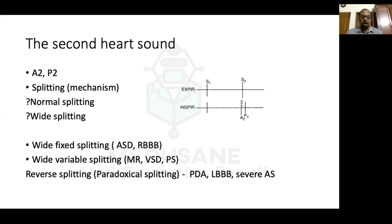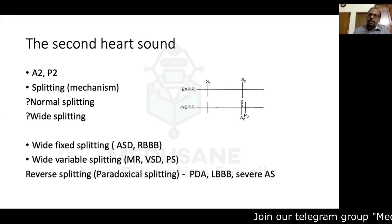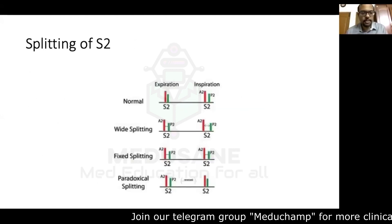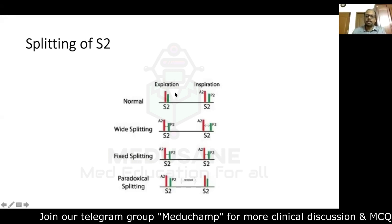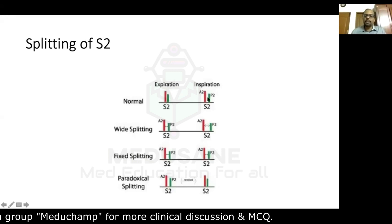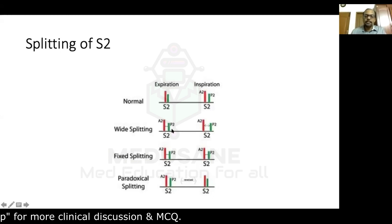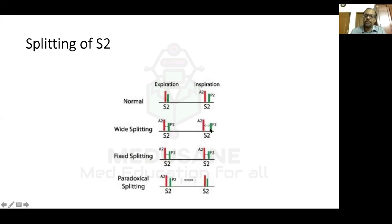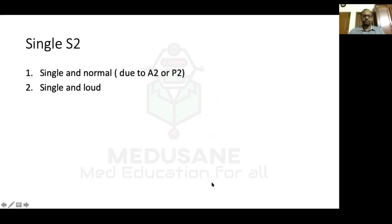Paradoxical or reverse splitting is opposite to normal splitting — split in expiration, single in inspiration — seen in PDA, left bundle branch block, and severe aortic stenosis. When S2 is single: it can be single and normal (aortic or pulmonary atresia, where only one component is audible — single A2 in pulmonary atresia, single P2 in aortic atresia), or single and loud due to malposition of great vessels. In transposition of great arteries or congenitally corrected TGA, the aorta is very anterior and close to the chest, making the aortic sound loud while the pulmonary sound is not heard. A single loud S2 can also occur in Eisenmenger VSD or Eisenmenger PDA with equalized A2 and P2 closure.